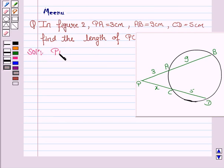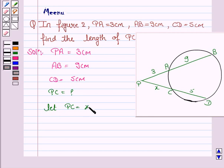We are given that PA is 3 cm, AB is 9 cm, CD is 5 cm, and we have to find the length of PC. Let PC be equal to x cm.